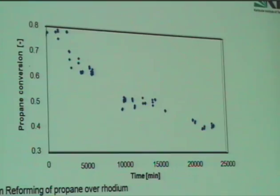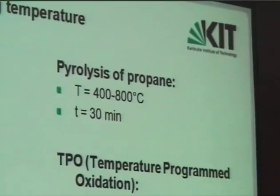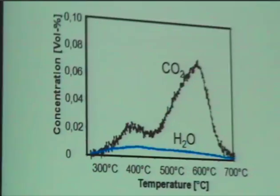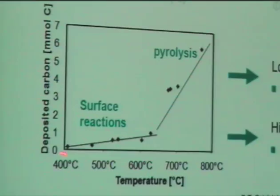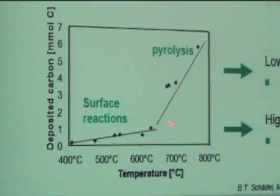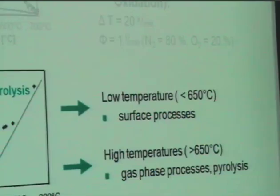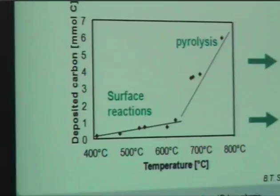To quantify the carbon amount deposited in different temperature regimes, we carried out temperature-programmed oxidation after pyrolysis of propane in the temperature regime of 400 to 800°C. The carbon amount is plotted against the oxidation temperature. We found two different kinetics of carbon accumulation depending on temperature: in the low temperature regime up to 650°C, the coking velocity is very low and coking results from surface reactions; above 650°C, the velocity increases and gas phase processes occur, meaning pyrolysis.